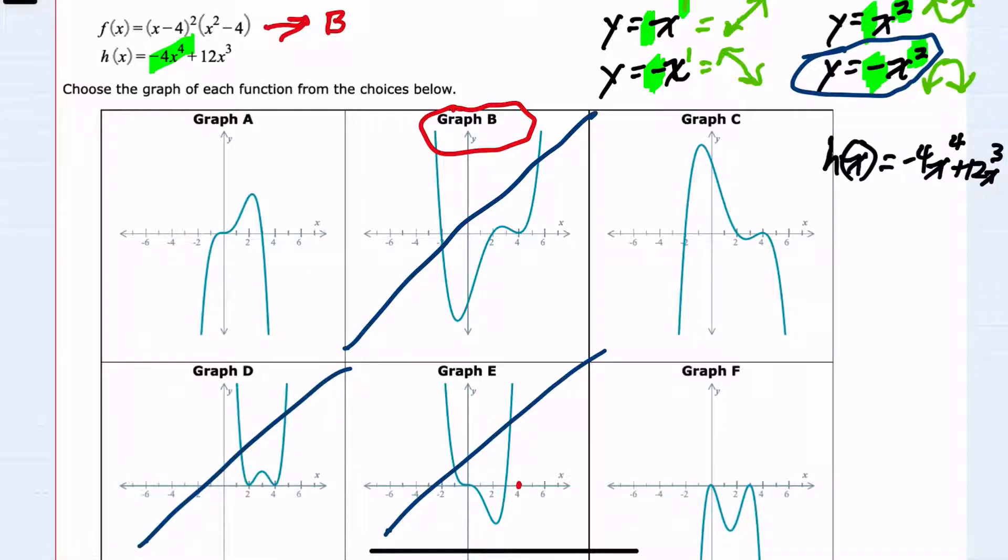So to find the zeros, I would first want to factor h of x. I can see that there's a common number in the coefficients. Between 4 and 12, I could factor out a 4. And both of these terms have at least three x's, so an x cubed. Since the leading coefficient here is negative, I'll also factor out a negative. Factoring out the negative 4 x cubed from the first term, I would be left with just an x. From the second term, if I factored out a negative 4 from that 12 coefficient, I would have a minus 3. And then I factored out the x cubed. So this would be our factored expression.